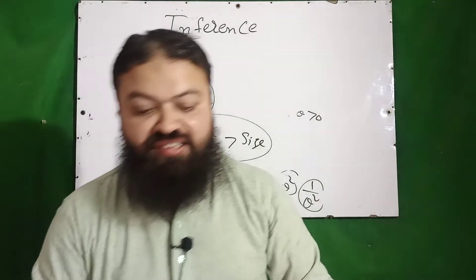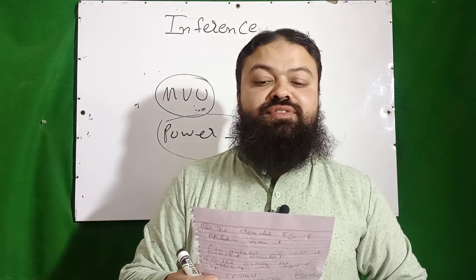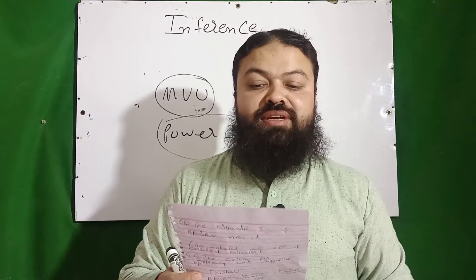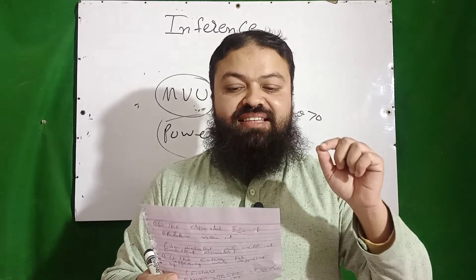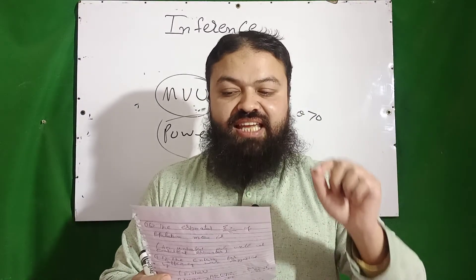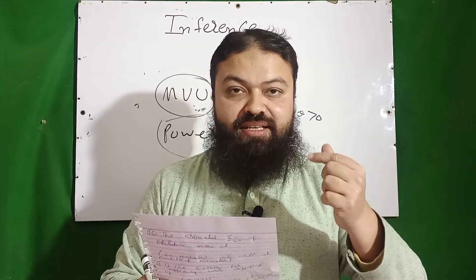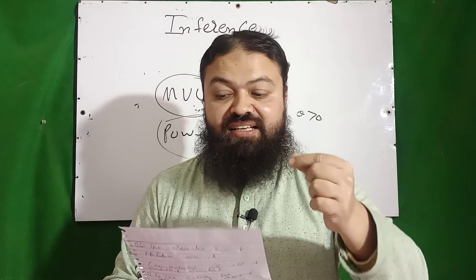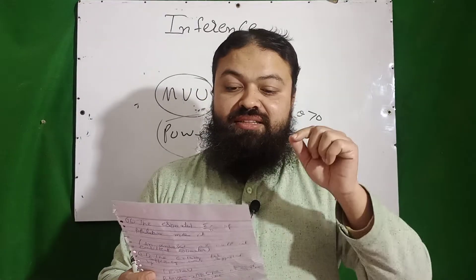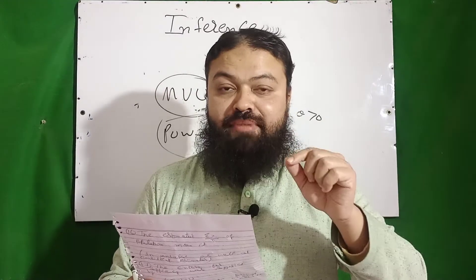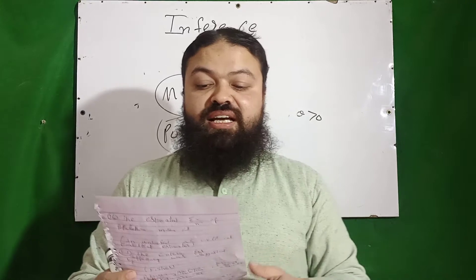Number eleven: if the regularity conditions of the Cramér-Rao inequality are violated, then the least attainable variance will be less than the Cramér-Rao bound.